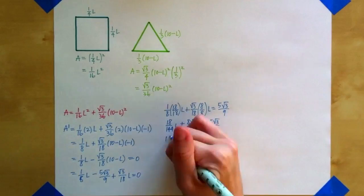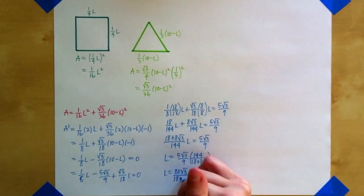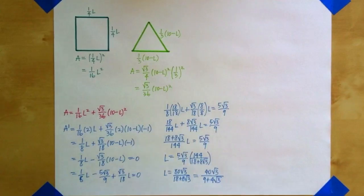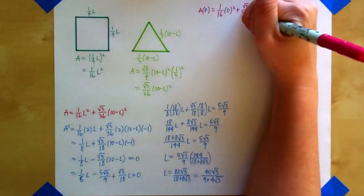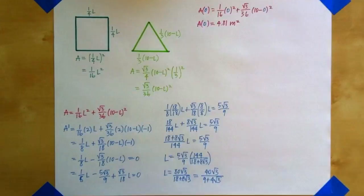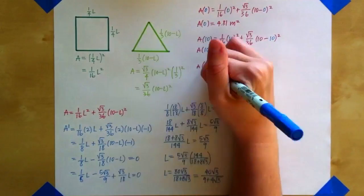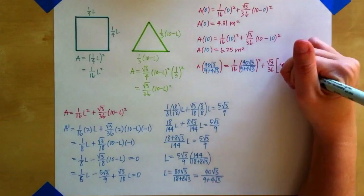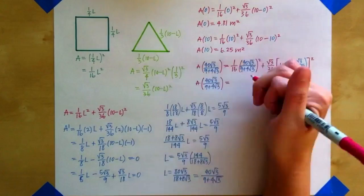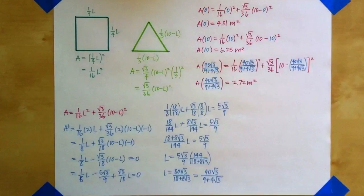This is either the value for L that maximizes area, or the value for L that minimizes area. Keep in mind that we're working with a closed interval, and the value of L cannot be less than 0, and it can't be greater than 10. In a situation like this, I know that maximum and minimum area can be found at values of L at the endpoints, 0 or 10, or at the critical point I found.